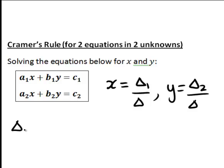where delta1 is the matrix determinant which has the constants in the first column, so c1, c2, and the coefficients of our second unknown y in the second column, namely b1, b2.